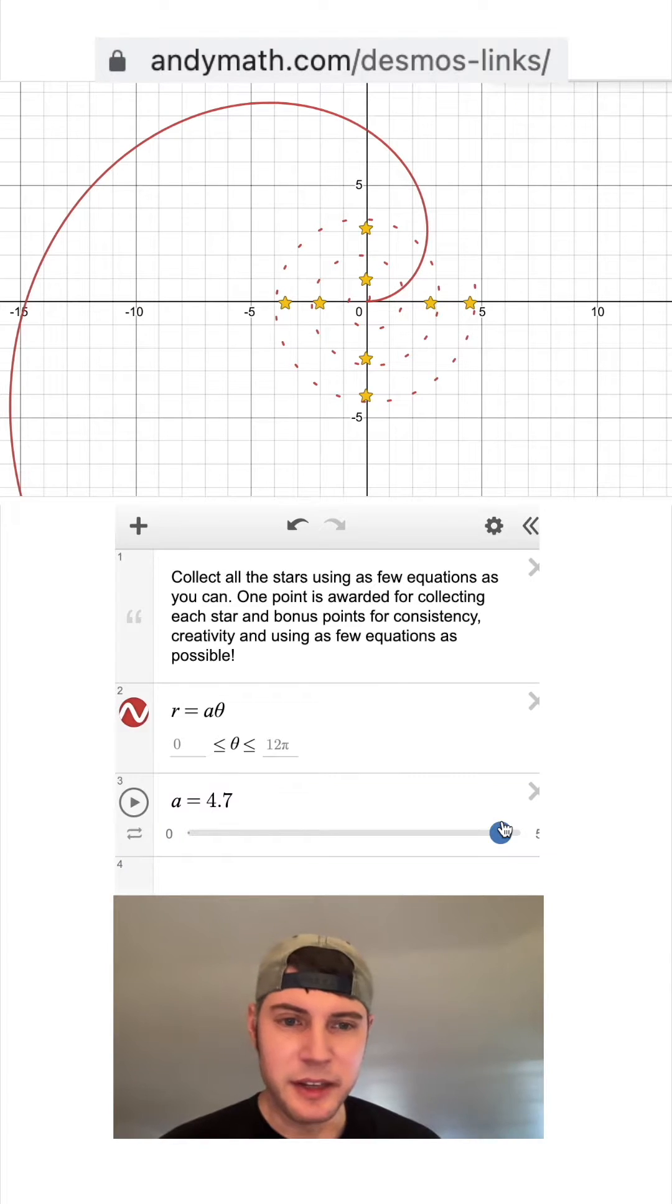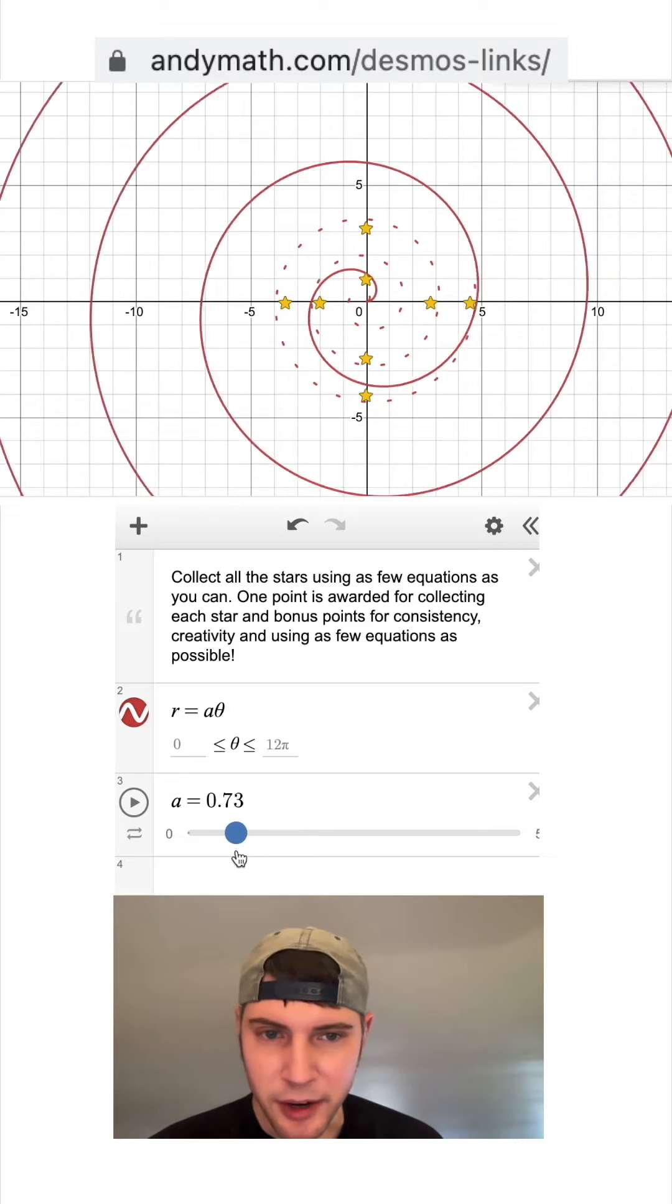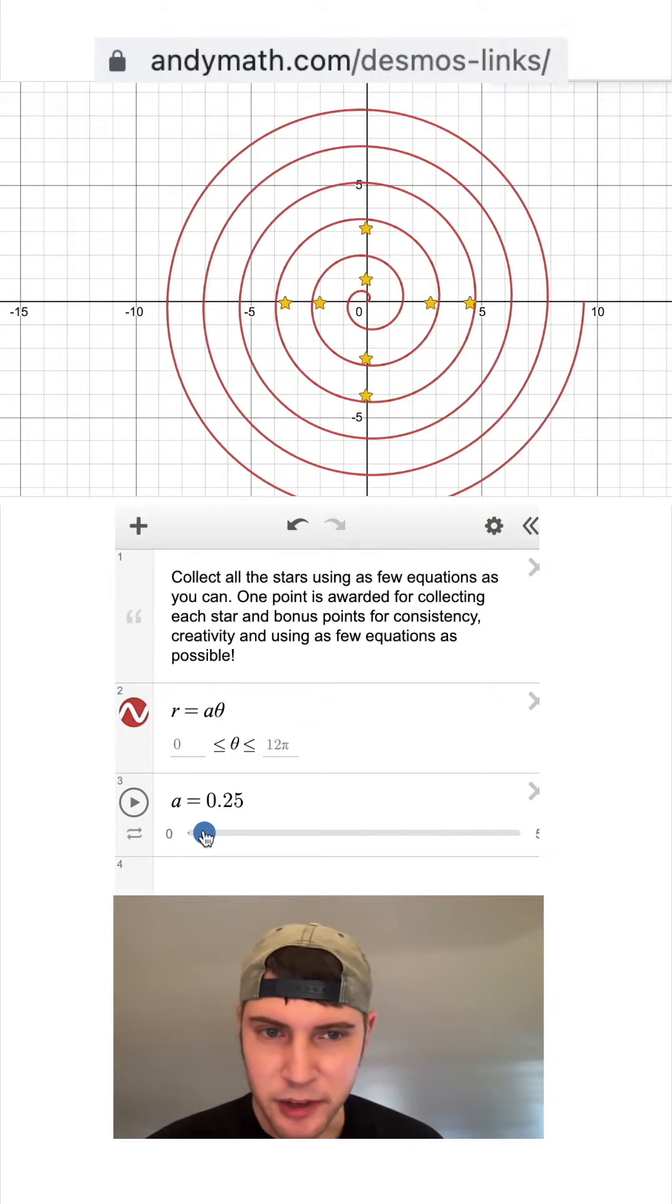And so if it's really big, then the spiral blows up really fast. And as we shrink the A down, we can get to where they're at. And it looks like their formula is R equals 0.25 theta.